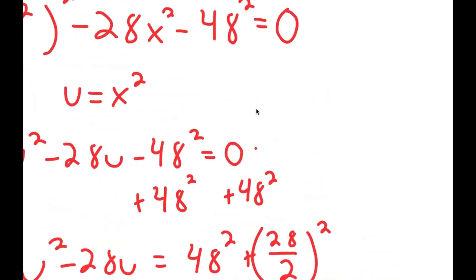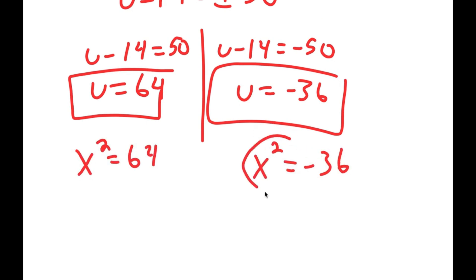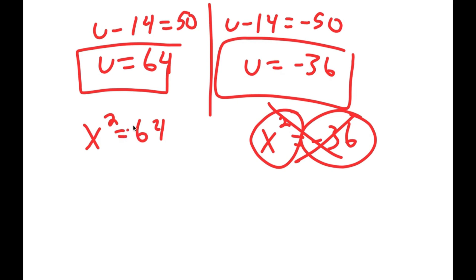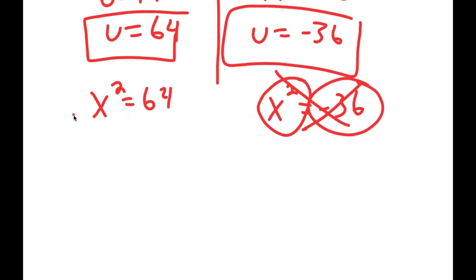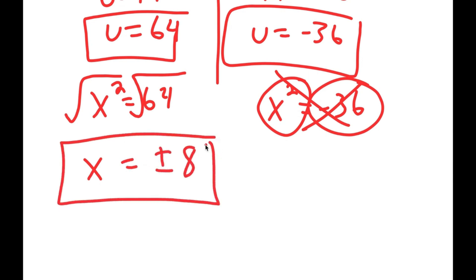Remember we let u equal x squared. So x squared equals 64 and x squared equals negative 36. We can't have a number squared equal to a negative number in real numbers, so x squared equals negative 36 is invalid. Therefore x squared equals 64, and taking the square root gives x equals positive or negative 8 as my two real solutions.